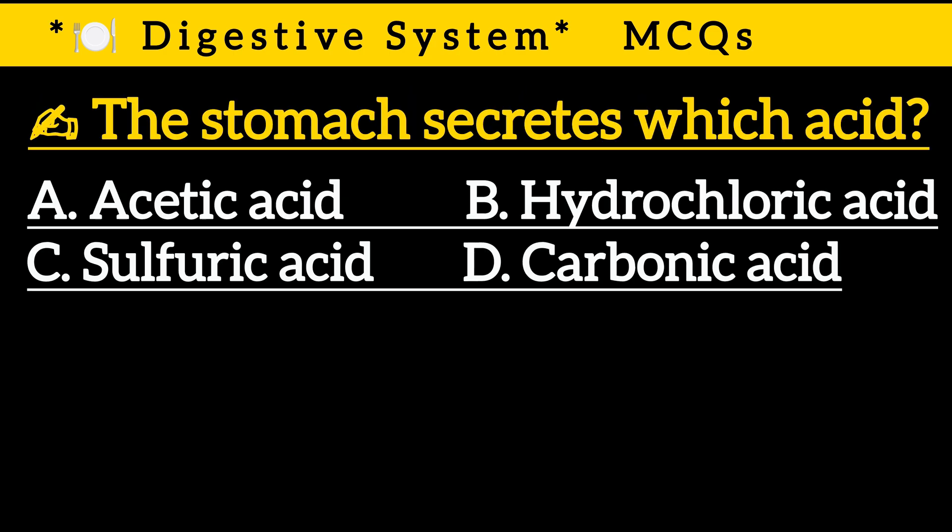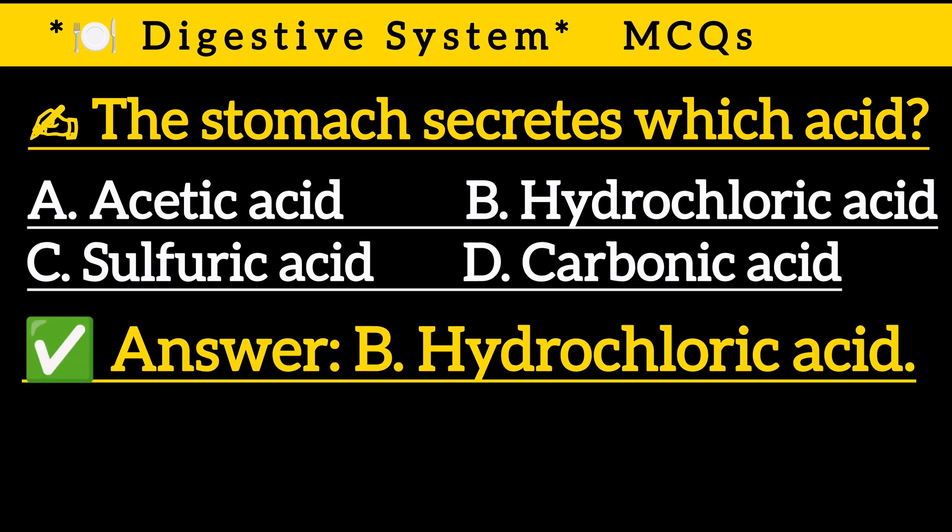Question 7: The stomach secretes which acid? — Option A: Acetic acid, Option B: Hydrochloric acid, Option C: Sulphuric acid, Option D: Carbonic acid. Correct answer is Option B: Hydrochloric acid.